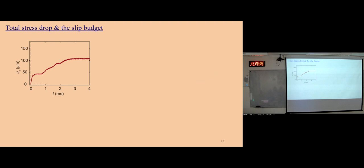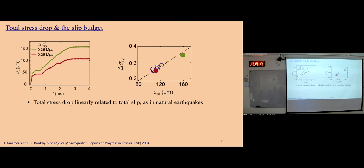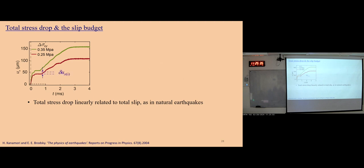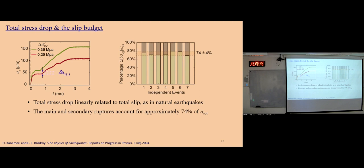Beyond this local measurement, let's go back to the global view of slip and stress drop. We find that if the stress drop increases, the total slip also increases. Here are several experimental results showing the linear relationship between total stress drop and total slip — this is also true in natural earthquakes. If we sum all the micro-slips during secondary ruptures, we find that the main and secondary ruptures account for approximately 70% of the total slip. This means most slip is caused by discrete invisible ruptures.